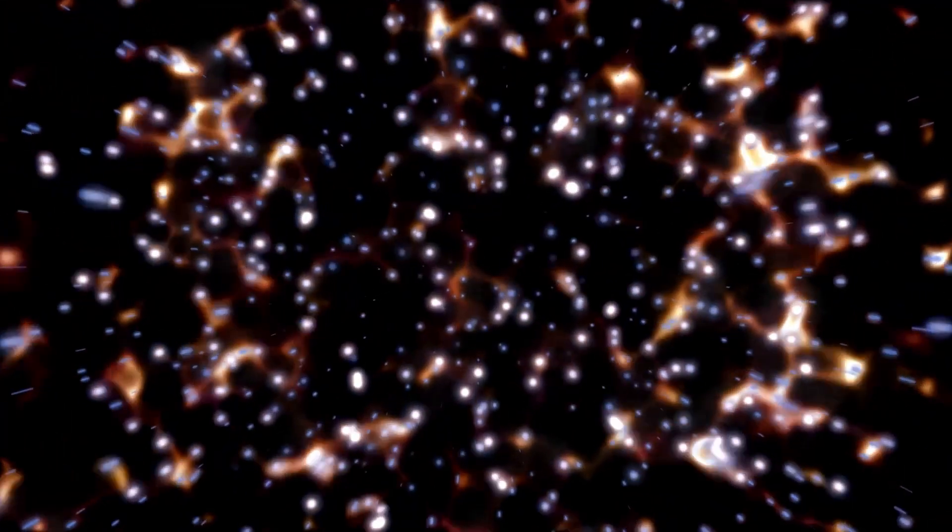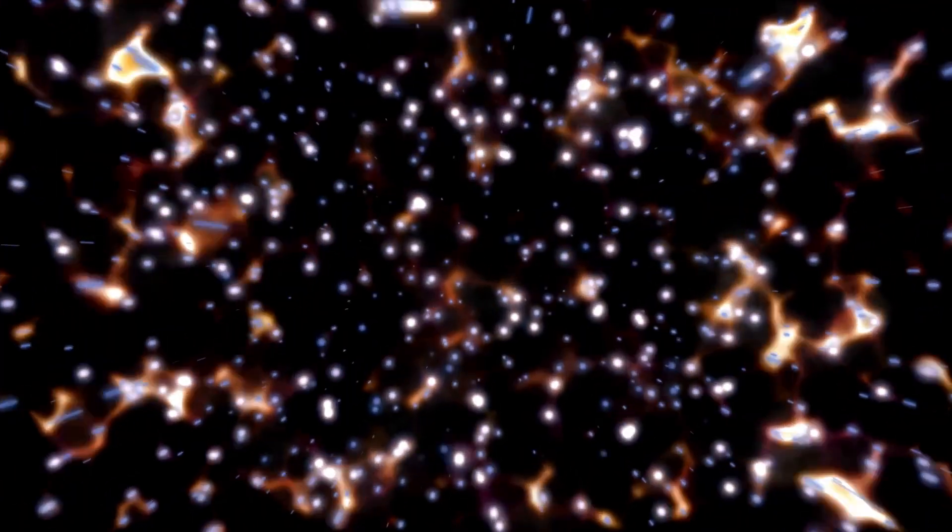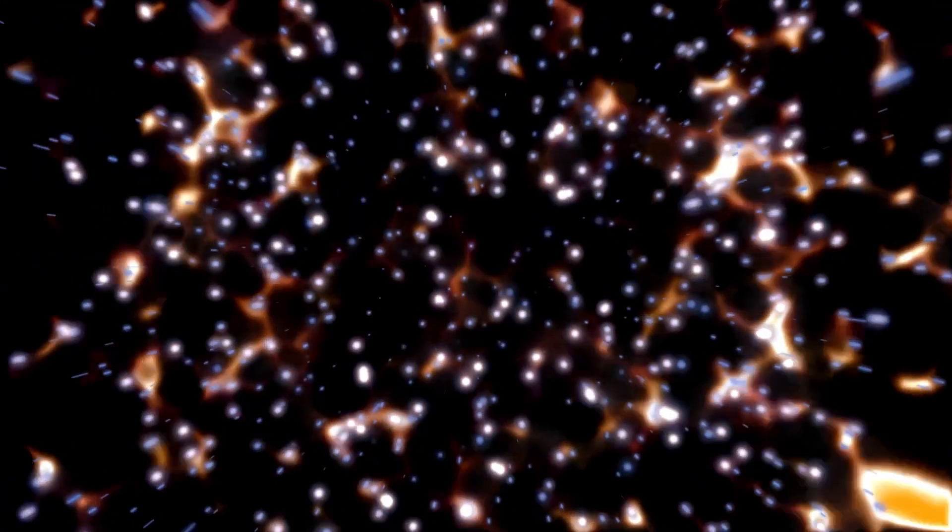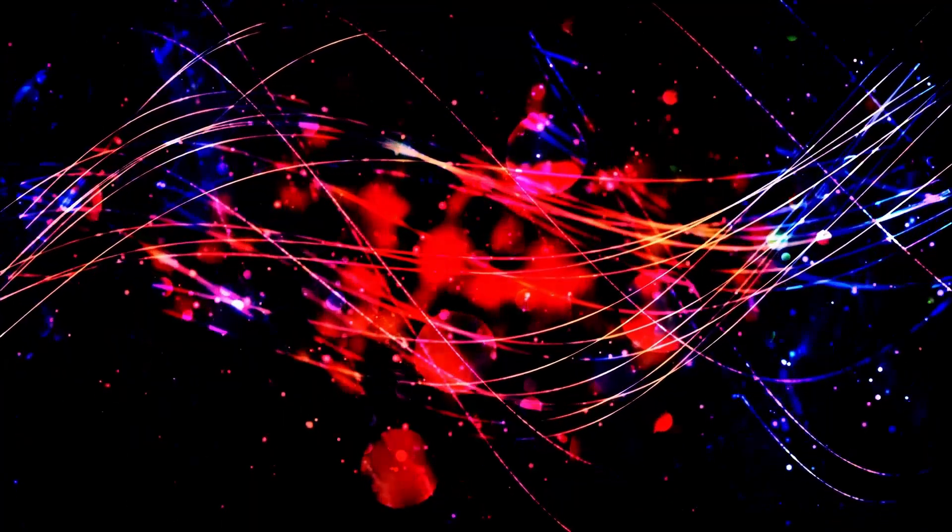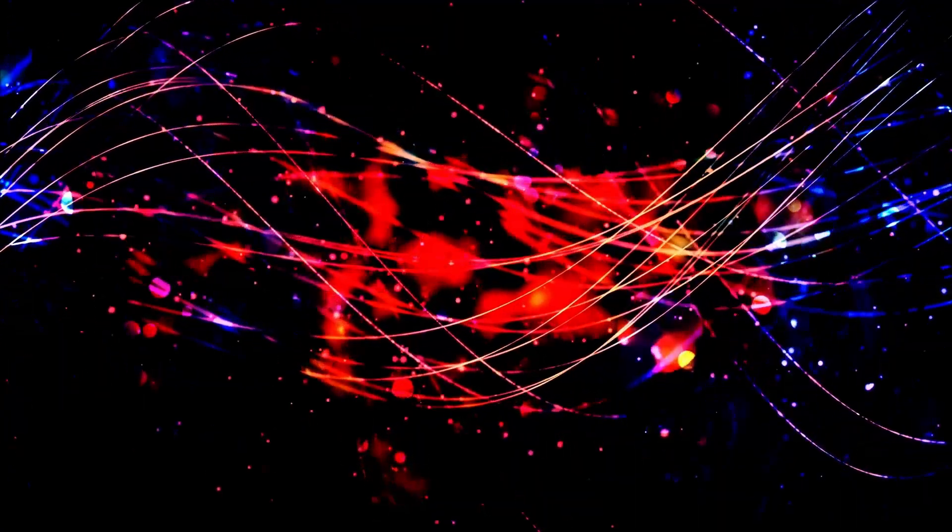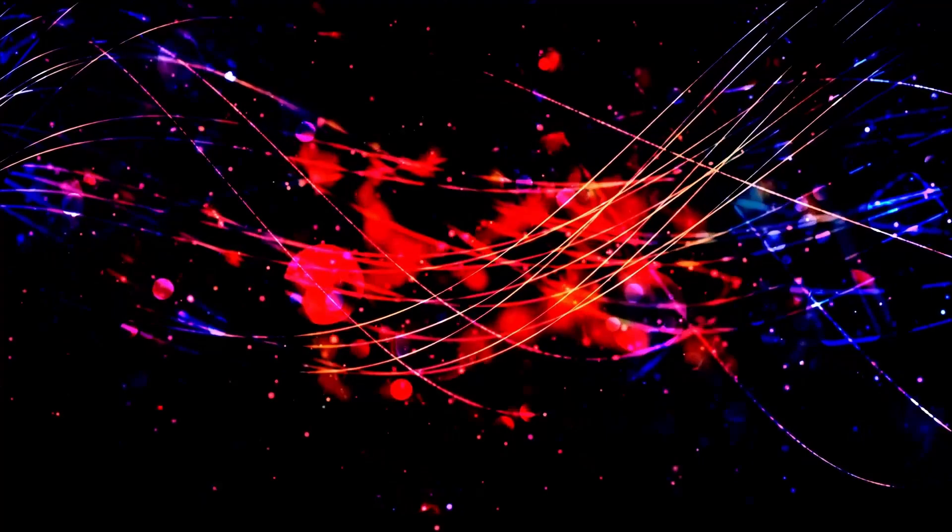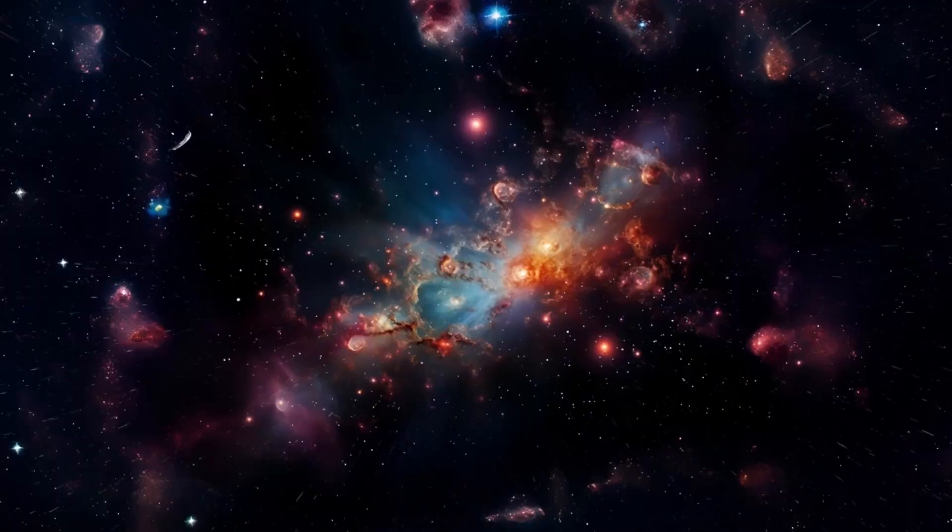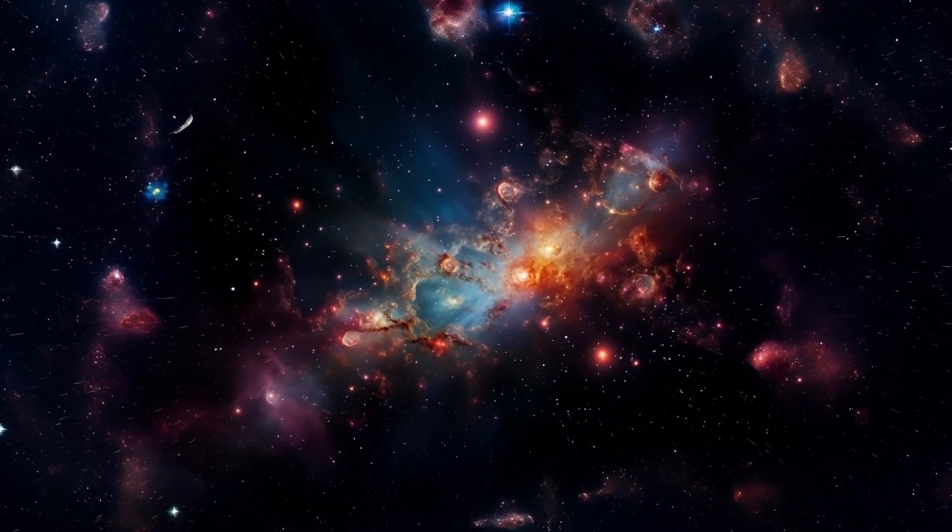Unlike stars that form in dense regions of gas and dust where new stars are born, Betelgeuse is located in a relatively quiet part of the galaxy. It is also classified as a runaway star, meaning that it has been ejected from its original location and is moving through space at high velocity.